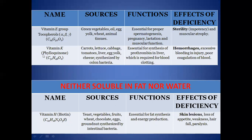Vitamin K is sourced from carrots, cabbage, and cheese. Its function is that it is essential for the synthesis of prothrombin in the liver, which is required for blood clotting. The effects of its deficiency include hemorrhages, excessive bleeding on injury, and poor coagulation of blood.